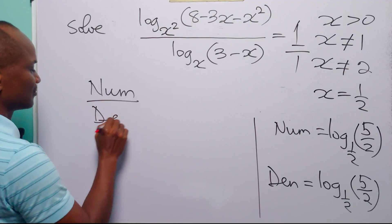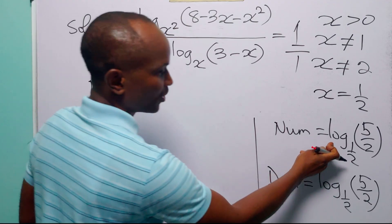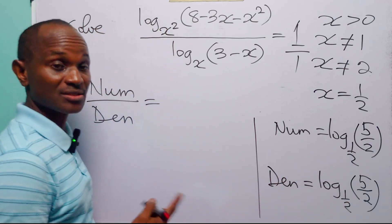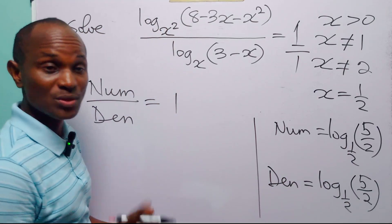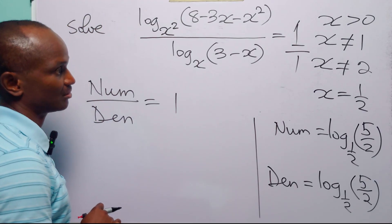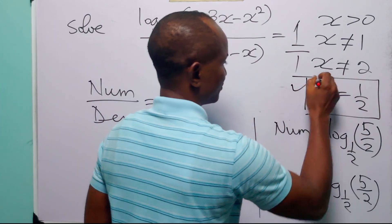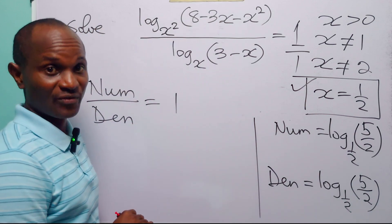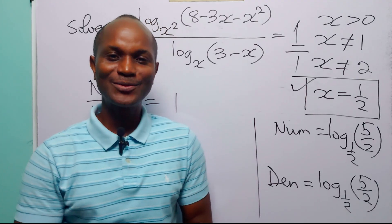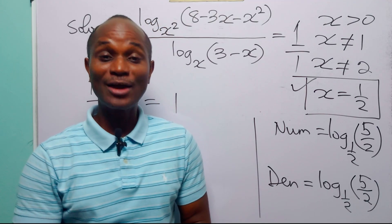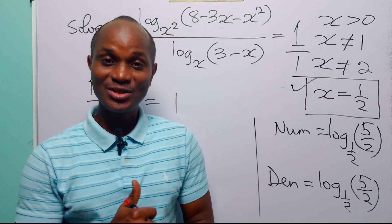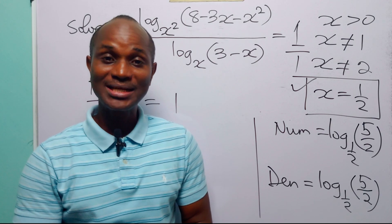The numerator divided by the denominator is log base one-half of (5/2) divided by log base one-half of (5/2), which equals 1. This is exactly the right-hand side of the original equation, confirming that x equals one-half is the correct solution. With that we come to the end of this tutorial — I hope you learned something new. If you enjoy such content, please subscribe to the channel and leave a thumbs up to support us. Thanks for watching.